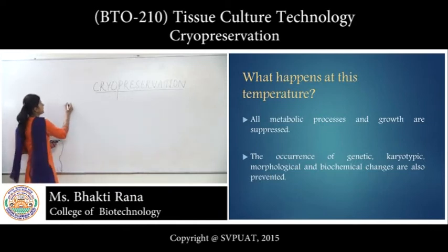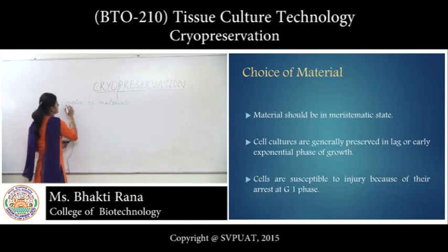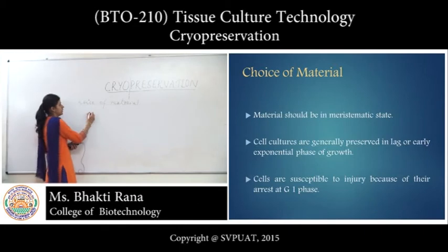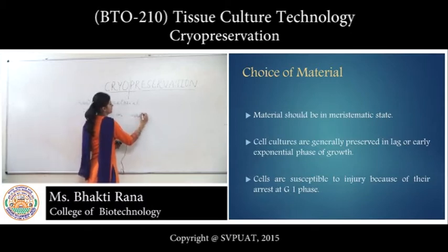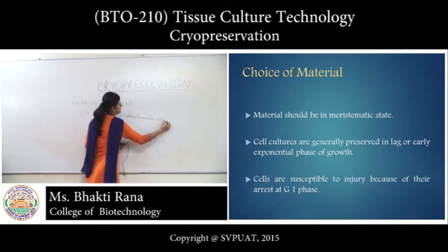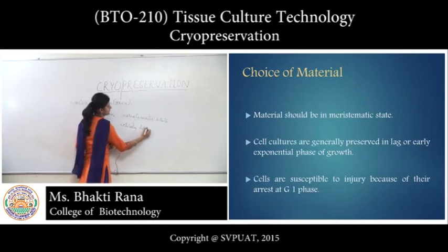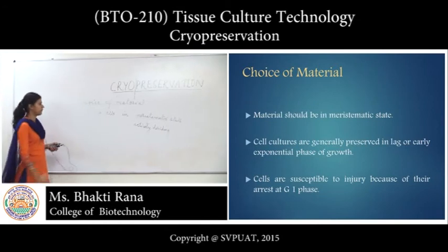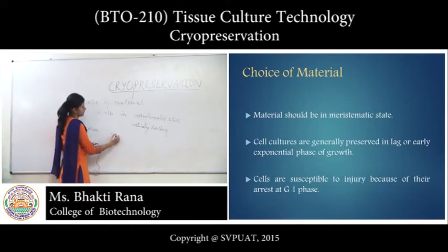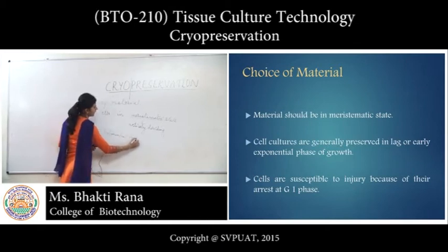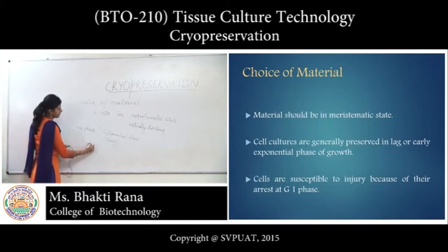For cryopreservation, the first need is the choice of material. What material are you going to choose? The material or cells should be in a meristematic state — that is, an actively dividing state. Cells are preserved in the lag phase or in the exponential phase, and they are arrested at the G1 phase.